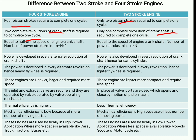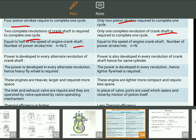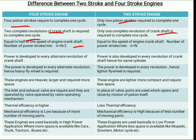In 4 stroke engines, the number of power strokes equals half the speed of the crankshaft: n = N/2, where n is the number of power strokes and N is the number of revolutions. In 2 stroke engines, the number of power strokes equals the speed of the crankshaft. For example, if the crank completes 10 revolutions in a 4 stroke engine, you get 5 power strokes, whereas in a 2 stroke engine, you get 10 power strokes for the same 10 revolutions.